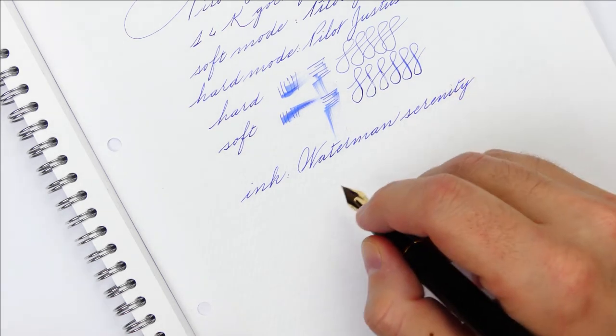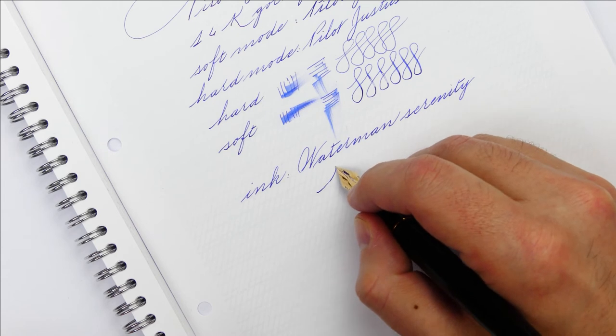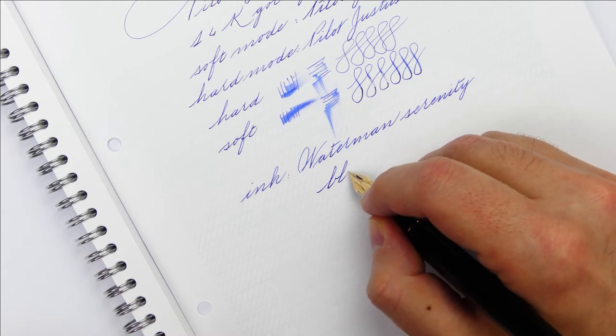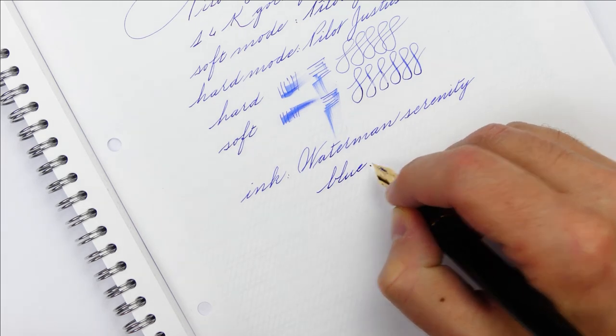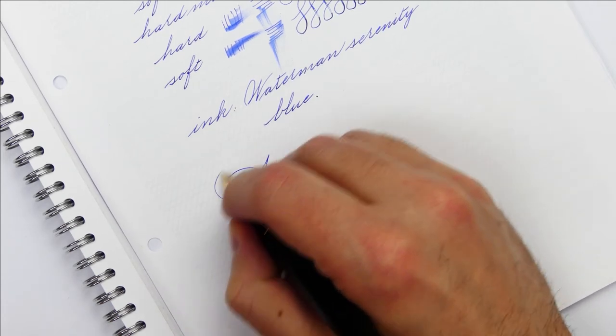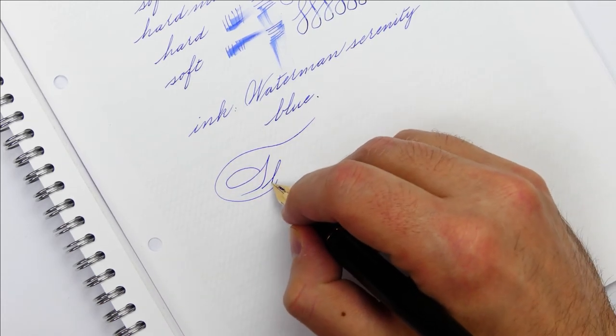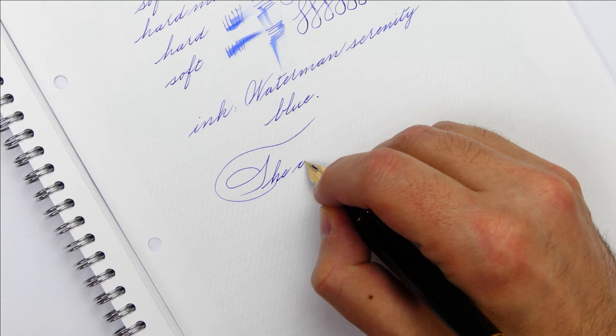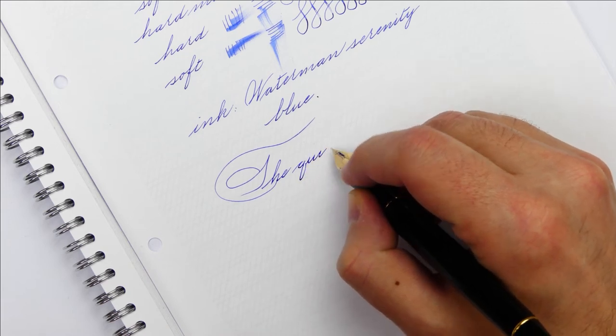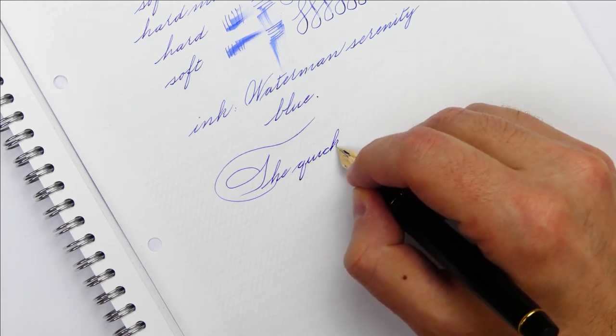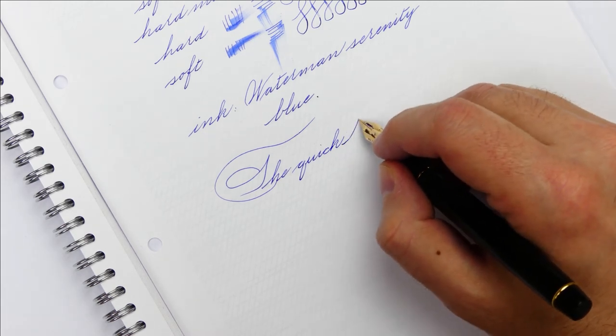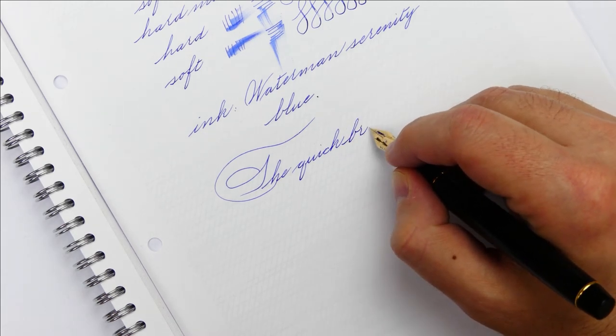In hard mode it becomes dry leaving an extra extra fine line. Applying pressure you get a little bit of line variation but even in soft mode it is the least soft nib I own. In hard mode there is no sense to push the nib. If you want to draw for line variation just use it in soft mode.